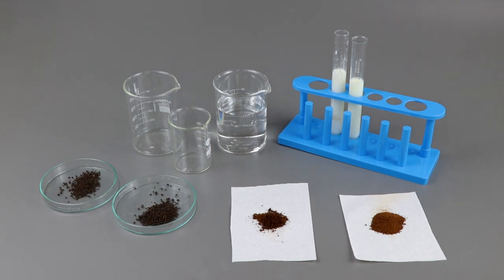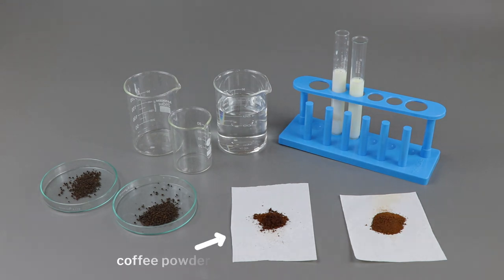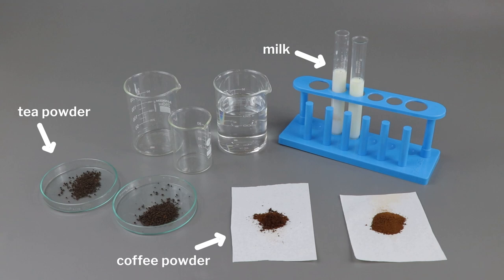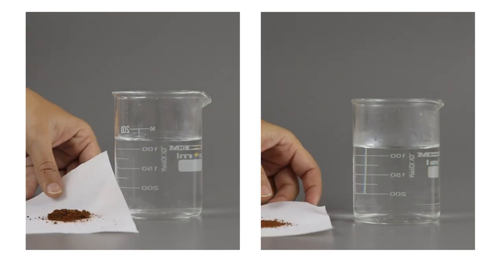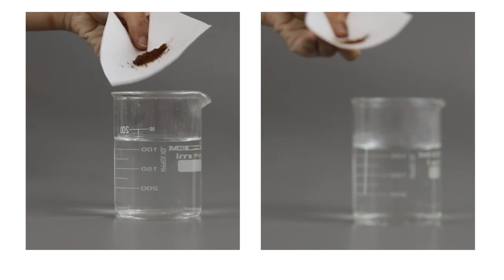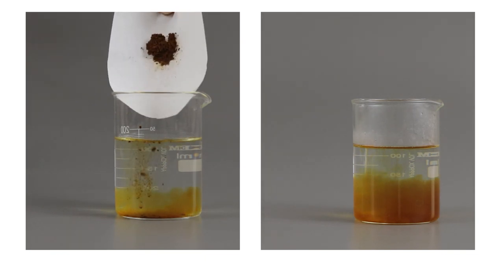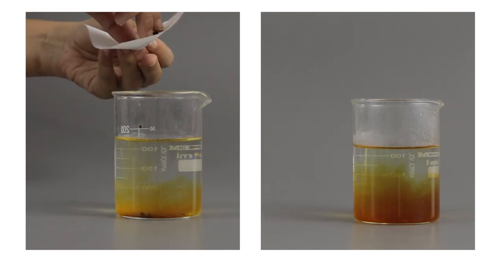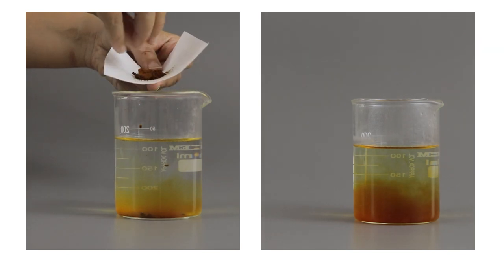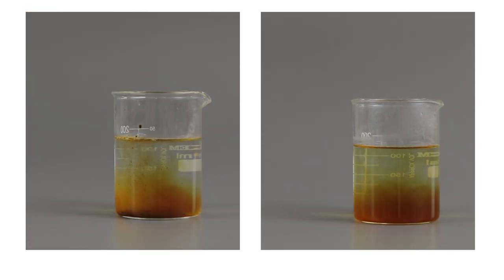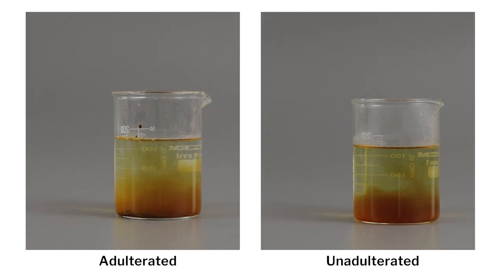For these tests, you will need adulterated and unadulterated samples of each food item — coffee powder, milk, and tea powder. You will also need glasses, some water, and a couple of small dishes. For the test to detect adulteration in coffee, add both coffee powder samples to separate glasses of water and allow them to stand for a while. Ask students to observe: unadulterated coffee powder will first float on the water and then slowly dissolve, but if clay is present as an adulterant, it will slowly settle to the bottom of the glass.